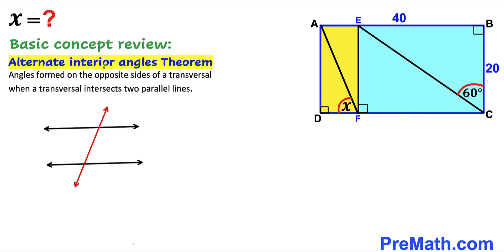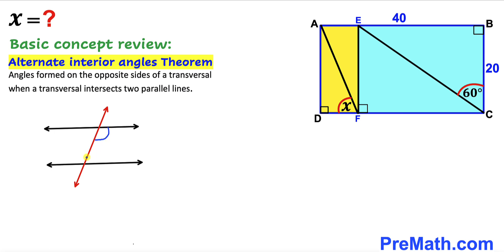Now let's recall the alternate interior angles theorem. According to this theorem, angles formed on opposite sides of a transversal when it intersects two parallel lines are alternate interior angles, and they are congruent. As seen in the diagram, these two parallel lines are cut by the red transversal, making the alternate interior angle pairs congruent.